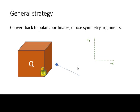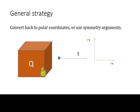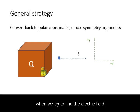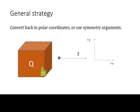Finally, we can convert back to polar coordinates or use symmetry arguments to simplify the solution. For example, when we find the electric field along an axis of symmetry, we can safely say that there is no component perpendicular to that axis.